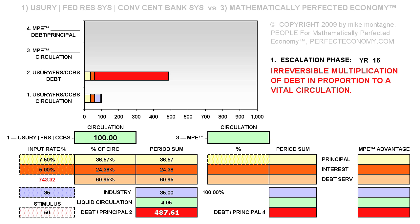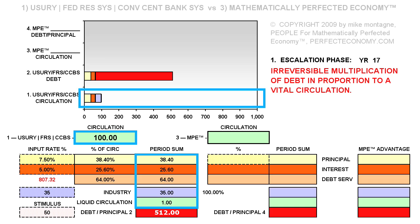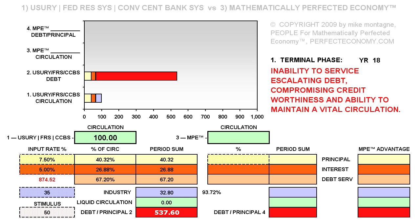In year 17, we see the costs of servicing the multiplying sum of debt have reduced the liquid circulation from the four units of year 16 to one unit. And so in year 18, as we would expect, because the sum of debt is periodically increased yet at an escalating rate at the given rate of interest, the multiplying sum of debt once again encroaches on the capacity to sustain vital industry.